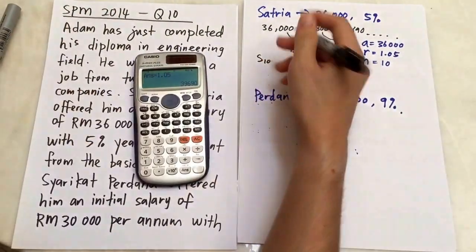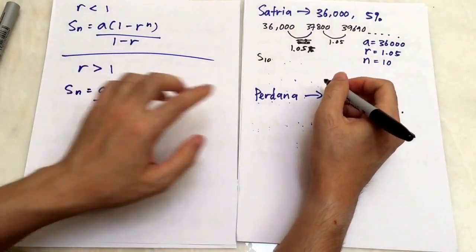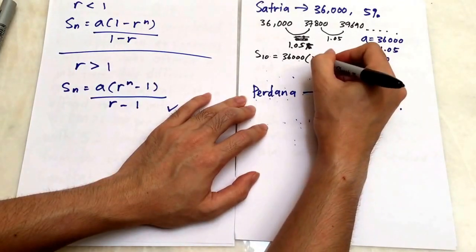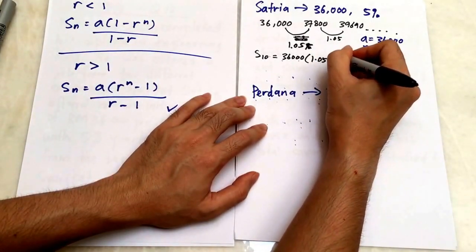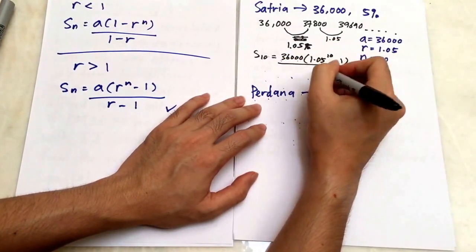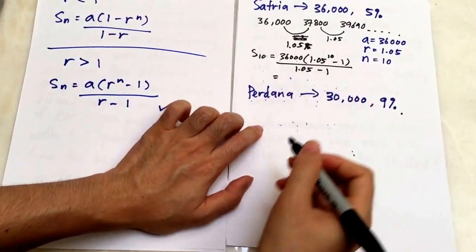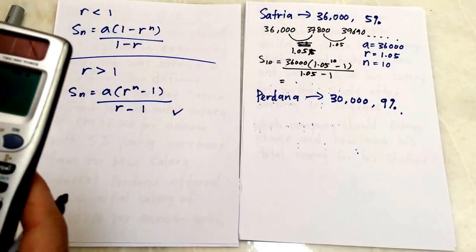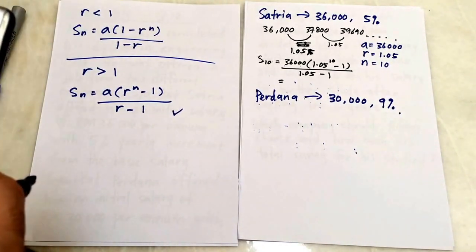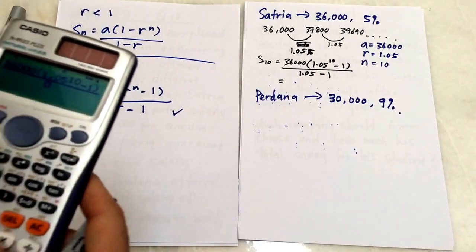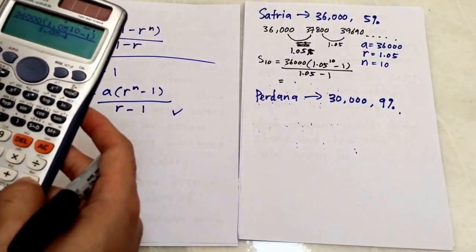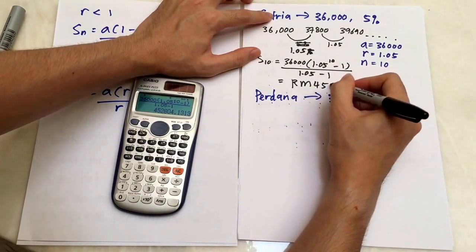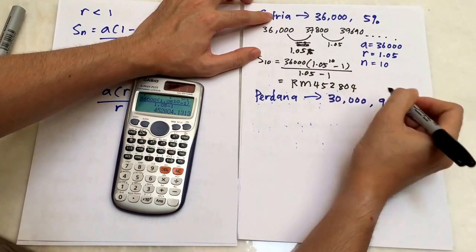My S10, I'll show you the formula here. So n is 10, my a is 36,000, my r is 1.05 power of 10, then I'm going to minus 1 over 1.05 minus 1. I just substitute everything—substitute into r and n. This is 36,000 × (1.05^10 - 1) / (1.05 - 1). After 10 years, the total money I will get is RM452,804. I stop here, I'm not going to take the decimal.